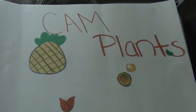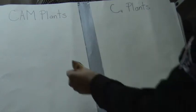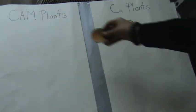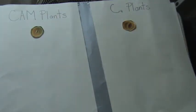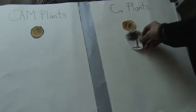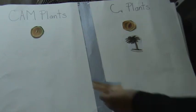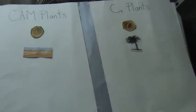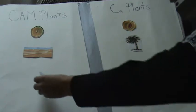Let's compare the two plants and show some examples. Our first difference is that CAM plants close their stomata during the day, whereas C4 plants only have their stomata closed partly. Another difference is that C4 plants originated in tropical areas, whereas CAM plants originated in deserts. Our last difference is that CAM plants retain a lot more water than C4 plants.